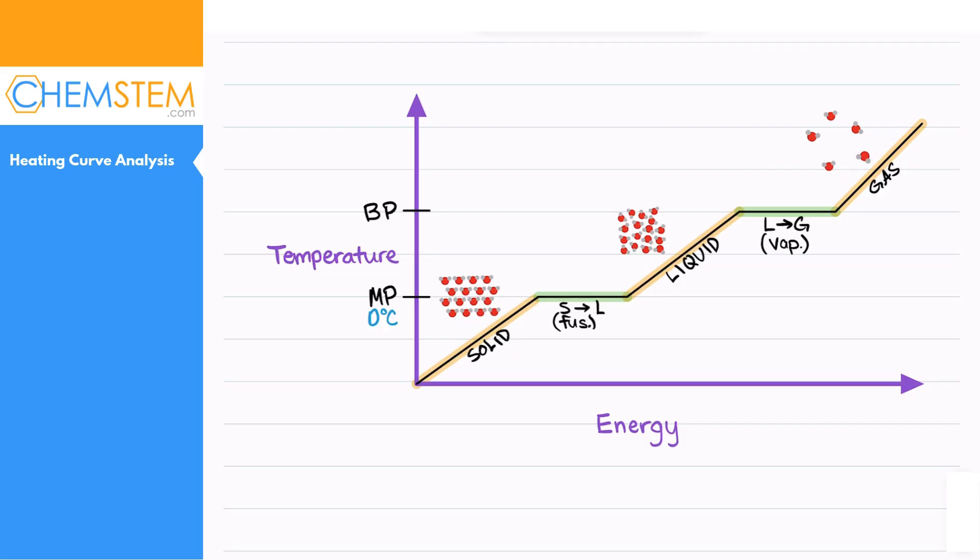So when does that happen for water? We know it's zero degrees Celsius for the melting point, but for water that is 100 degrees Celsius for the boiling point.